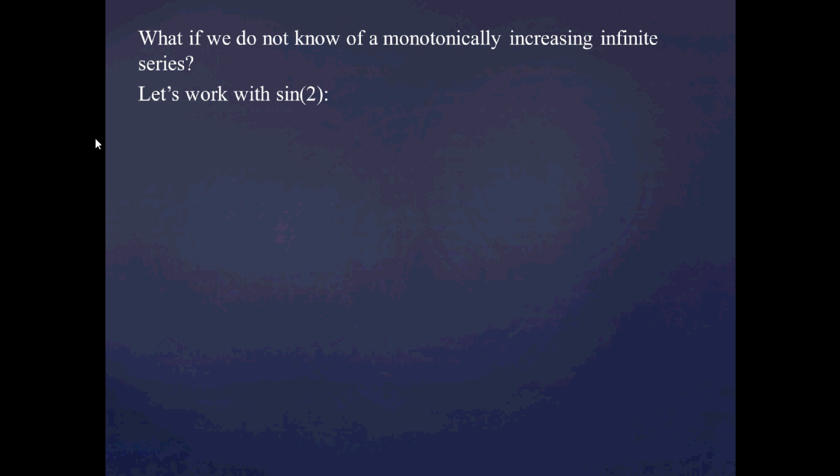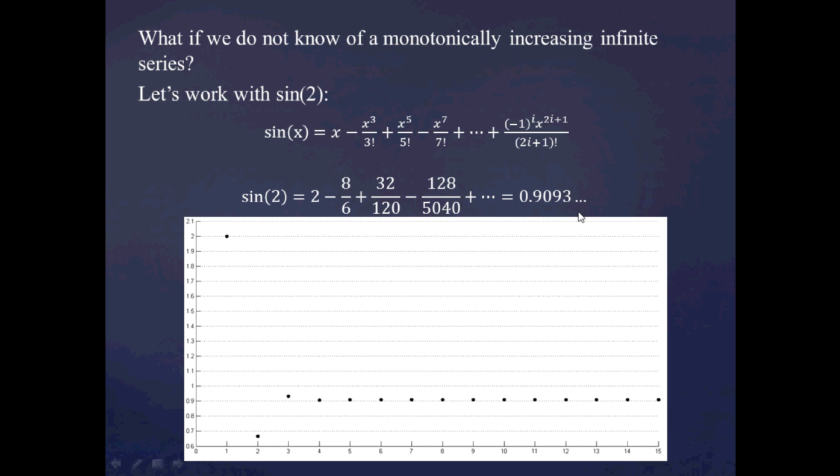Now, you very reasonably may ask, what if we don't know of a monotonically increasing infinite series for the number we're trying to define? So, to explore that case, let's work with sine of 2. Now, I picked the sine of something just because the sine has a well-known alternating McLaurin series dealing with only the odd powers of x. And here's a symbolic representation here. And so, we plug in x equals 2 and we get the following alternating series, which goes toward, here's a truncation here to four decimal places, 0.9093.